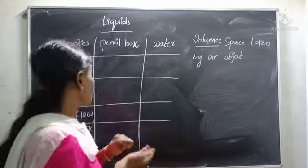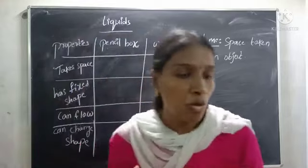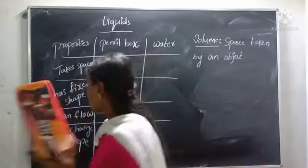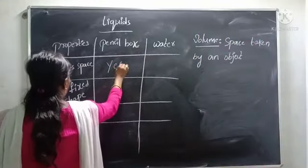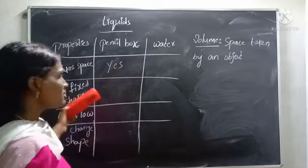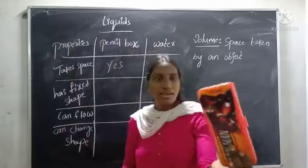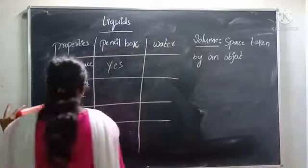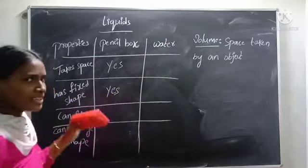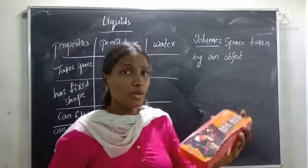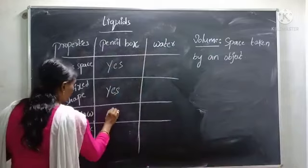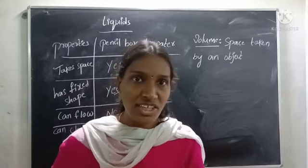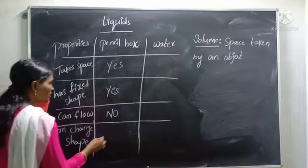Now we will do an experiment. The first resource is the pencil box. Is this taking up space? Yes, a pencil box takes up some space and it has mass. Is the pencil box fixed in shape? I am trying to fold it — is it changing shape? No. The pencil box is a solid and it has a fixed shape. It cannot flow, and it cannot change its shape.